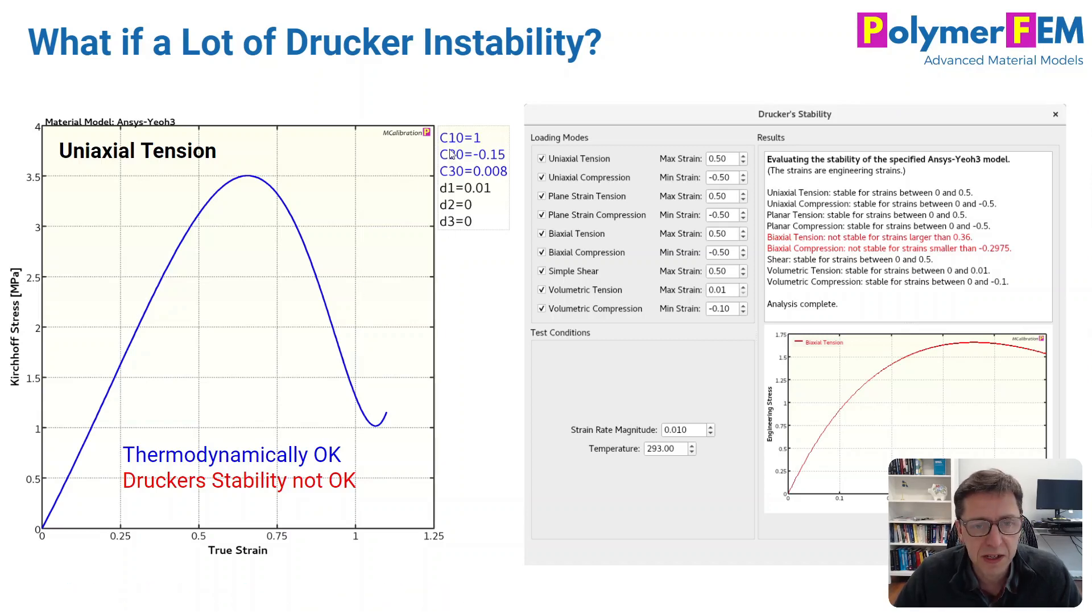In this case, you can specify which of these conditions that MCalibration should explore, and then it just examines them up to a given max strain. And in this case, this particular material model on the left, this Yeoh hyperelastic model, is not stable even at relatively small strains in biaxial tension and compression. So that's good to know because it looks like this is actually fine up to a relatively large strain in uniaxial tension, but it's not stable in biaxial tension according to the Drucker condition.